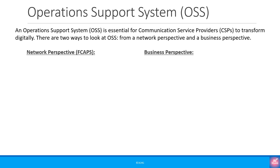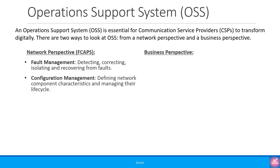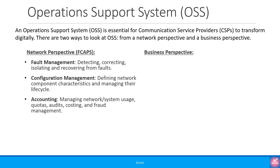From a network perspective, OSS is responsible for FCAPS. F is fault management, which includes detecting, correcting, isolating and recovering from faults. C is configuration management, which includes defining network component characteristics and managing their lifecycle. A is accounting, which involves managing the network including system usage, quotas, audits, costing and fraud management.